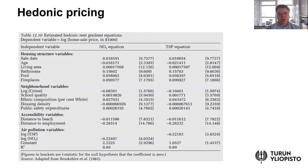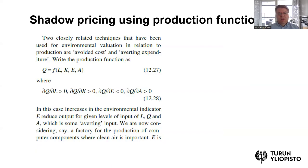Hedonic pricing is one revealed preference approach. In the production context, another approach I have worked with in recent research is so-called shadow pricing using production functions.